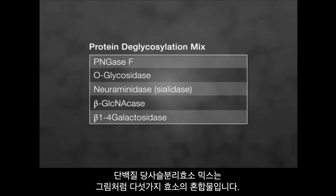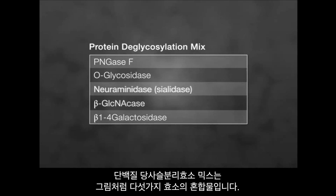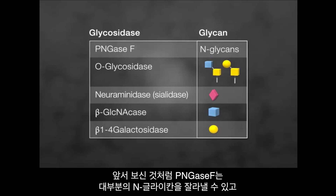The protein deglycosylation mix is a combination of PNGase-F, O-glycosidase, neuraminidase (also called sialidase), beta-GlcNAcase, and beta-1,4-galactosidase. As shown before, PNGase-F removes most N-glycans.